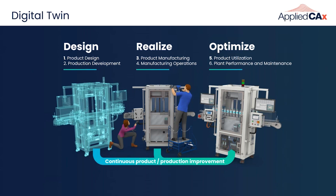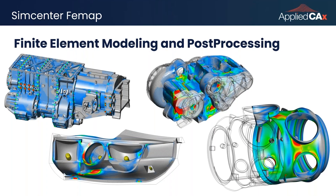A digital twin enables design and manufacturing teams to collaborate and move faster. SimCenter FEMAP is a general finite element modeling and post-processing platform — that's literally what FEMAP stands for. It can be used for a variety of pre- and post-processing tasks for structural, thermal, and fluid analysis. We call it agnostic because it's designed to work with a wide range of geometry types and analysis solvers.